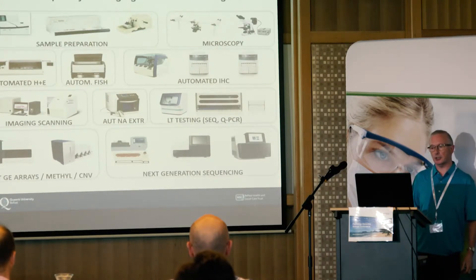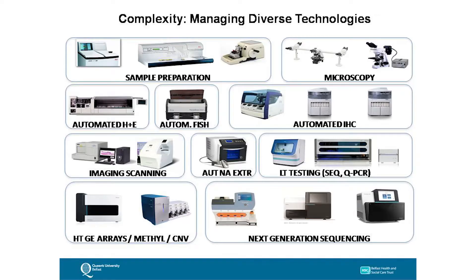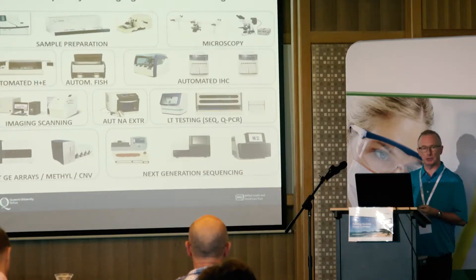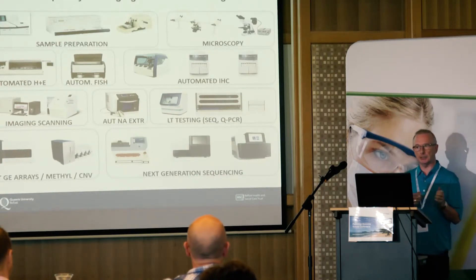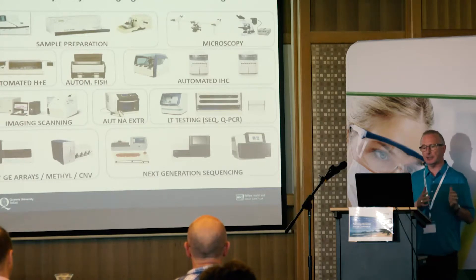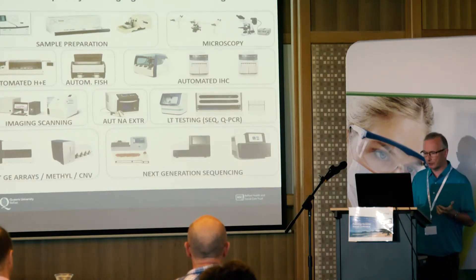Diverse technology in the laboratory: we have the basics found in any pathology AP system — processing, embedding, microtomy, microscopy, automated slide generation. Then we move to extracting DNA through automated and manual systems, laboratory testing for single genes, targeted gene panels, or multi-gene next generation sequencing. And then extending beyond DNA to epigenomics, methylated DNA, and expression arrays from RNA.